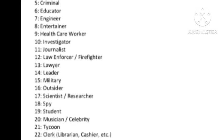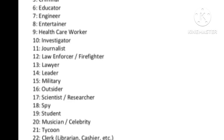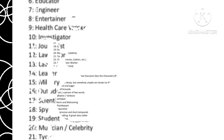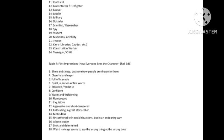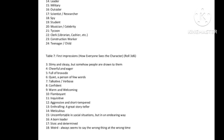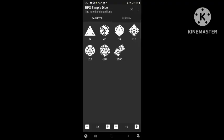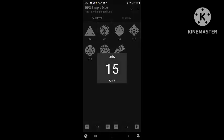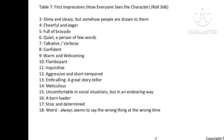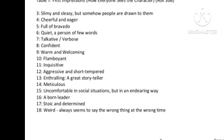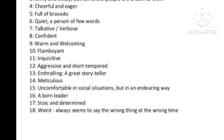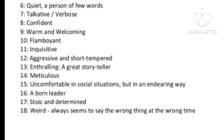So we're some type of elemental creature that happens to be a lawyer by day. Next is the table where we roll for first impressions — how do people see your character? We've gotten a 15, and that translates into being uncomfortable in social situations, but in an endearing way.